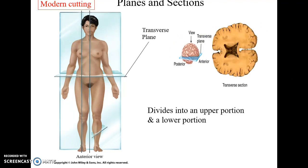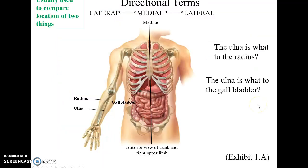The transverse plane cuts the body into an upper portion and a lower portion, and is therefore parallel to the floor. Here is a view of a transverse plane going through the brain, giving us a transverse section of that organ.